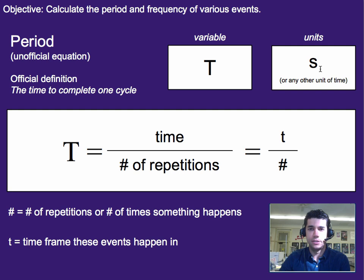The amount of time is usually going to be in seconds. And to calculate the period, you really just take the amount of time and you divide it by the number of repetitions or number of things that happen in that amount of time.